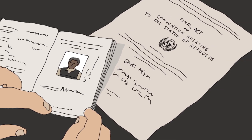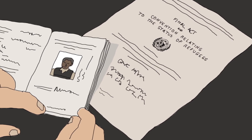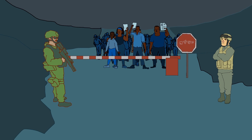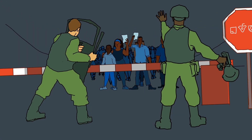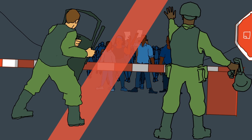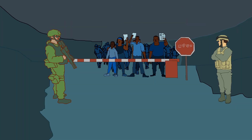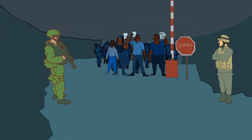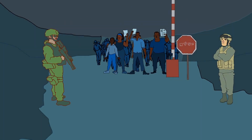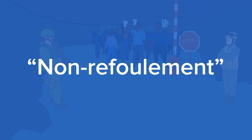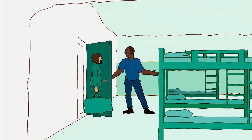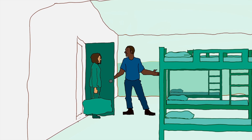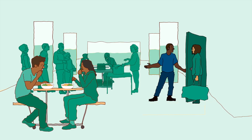So what rights does this Convention provide? One of its most important principles is that people cannot be sent back to their country of origin if this puts them at risk because of conflict or persecution. This principle is known as non-refoulement. Once they have crossed a border, refugees have the right to remain in safety in another country.